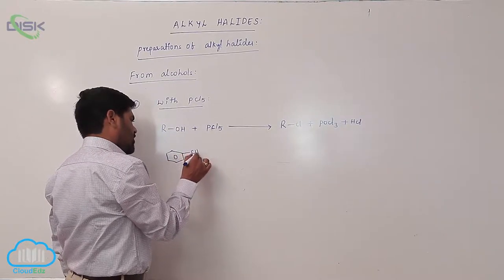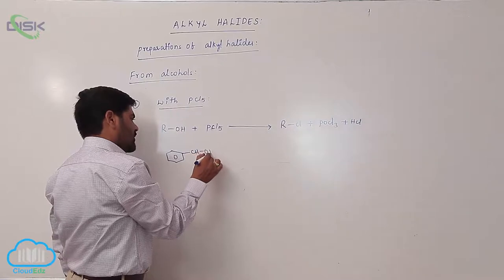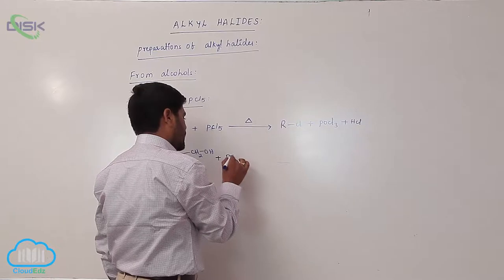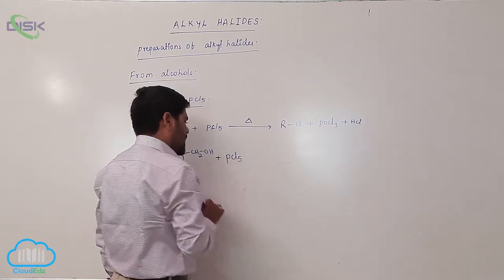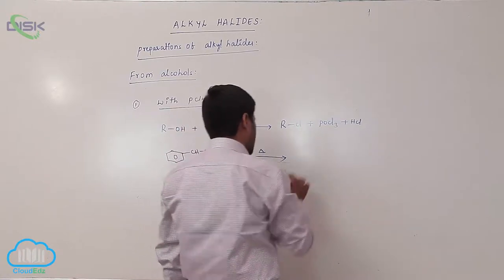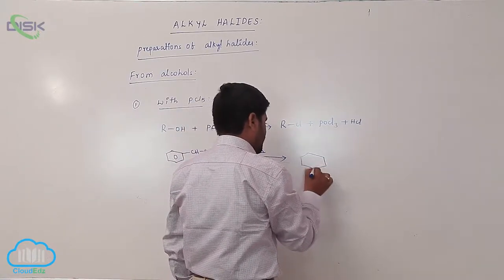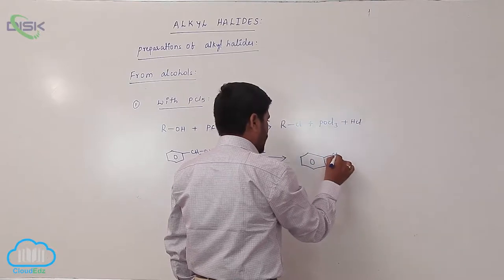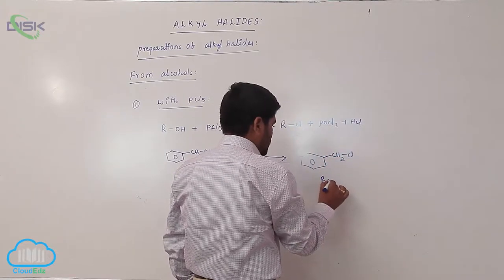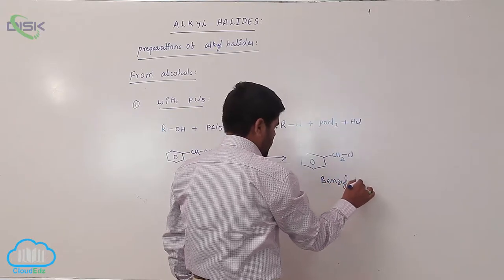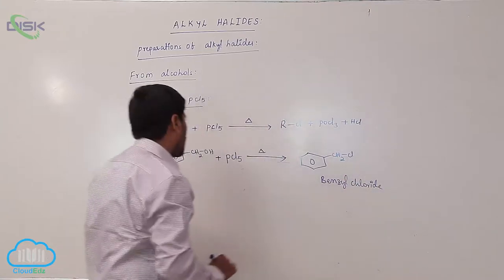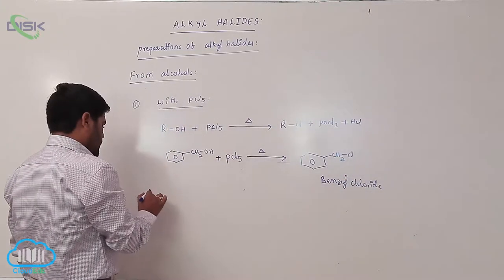For example, benzyl alcohol reacts with phosphorus pentachloride to form benzyl chloride. This product is known as benzyl chloride.